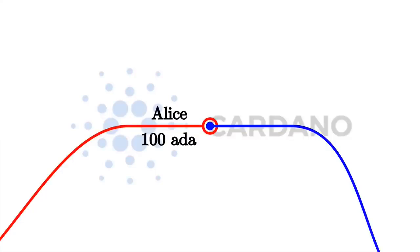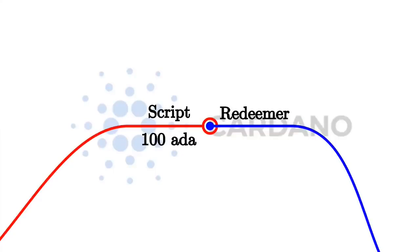So instead of an address going to a public key like Alice's public key, there will be an arbitrary script containing arbitrary logic. And instead of a signature in the transaction, the input will justify that it's allowed to consume the output with some arbitrary piece of data that we call the redeemer. So we replace the public key address with a script, and we replace the digital signature with a redeemer, which is an arbitrary piece of data.